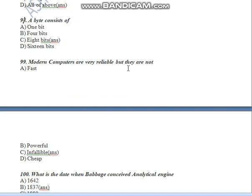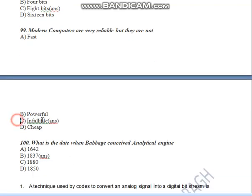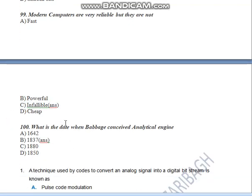Question 99: Modern computers are very reliable, but they are not fast — actually modern computers are fast and powerful. Modern computers are also inexpensive, but they are not infallible. So the answer is C — infallible.